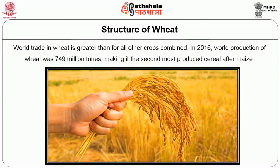Depending on the soil, climatic conditions, quality of seed and farming techniques, wheat varies widely in its properties. It is grown on more land area than any other food crop. World trade in wheat is greater than for all other crops combined. In 2016, world production of wheat was 749 million tons, making it the second most produced cereal after maize.